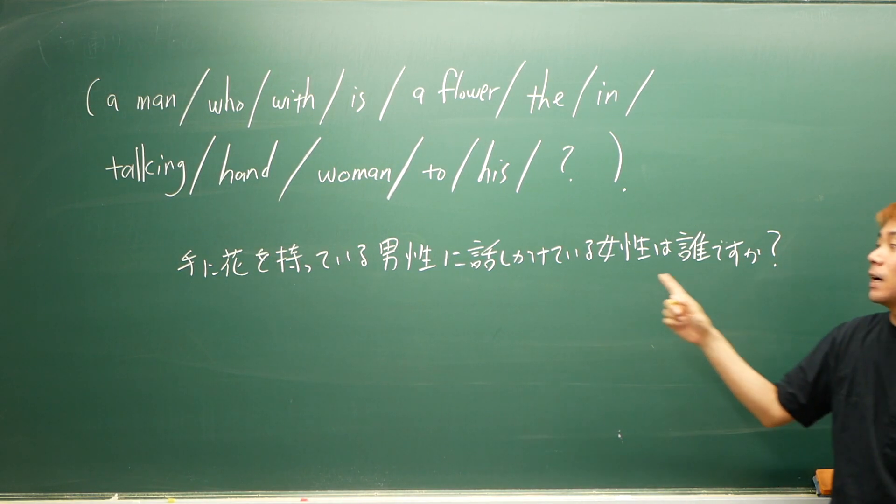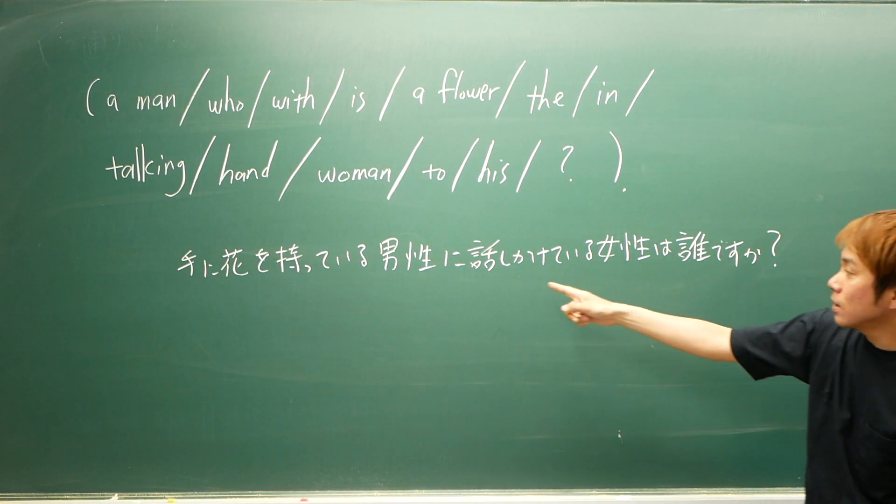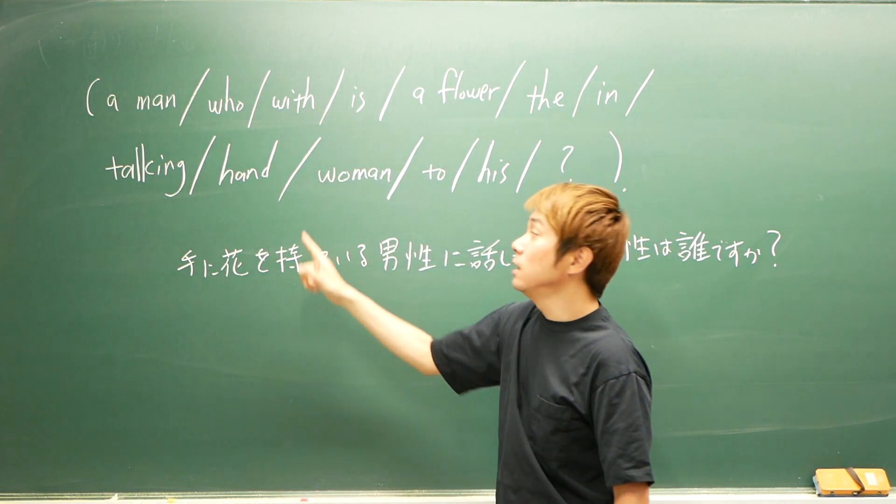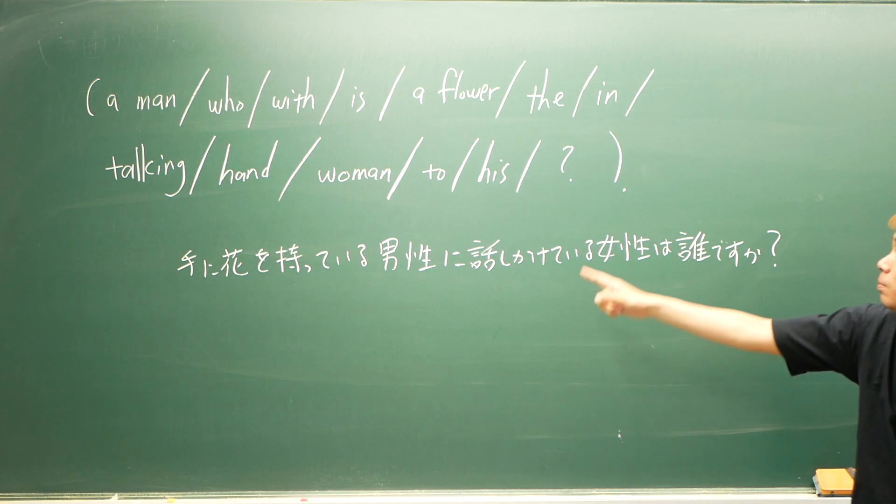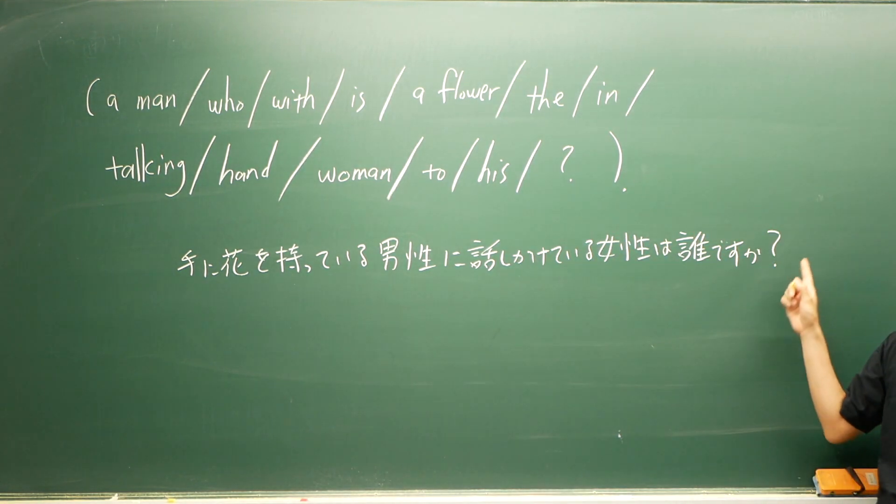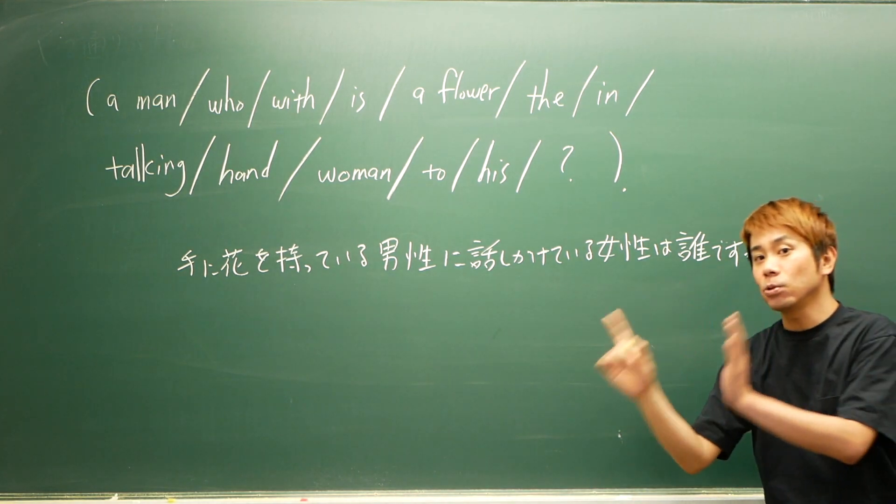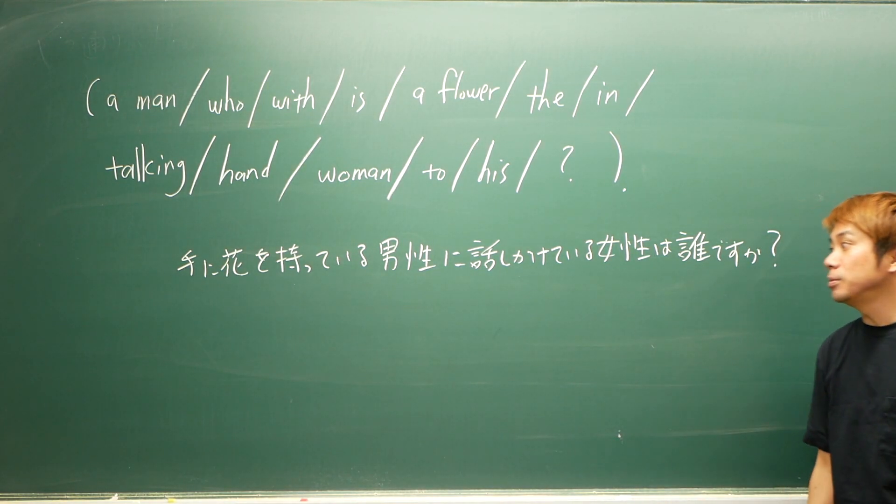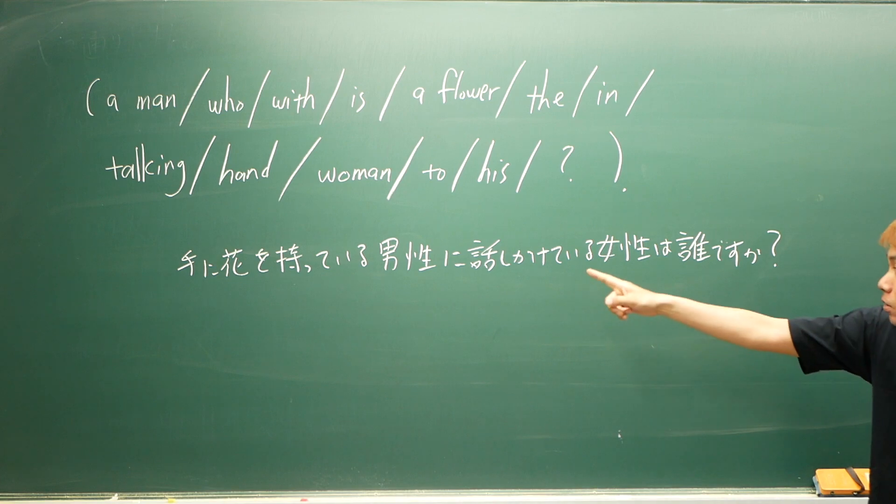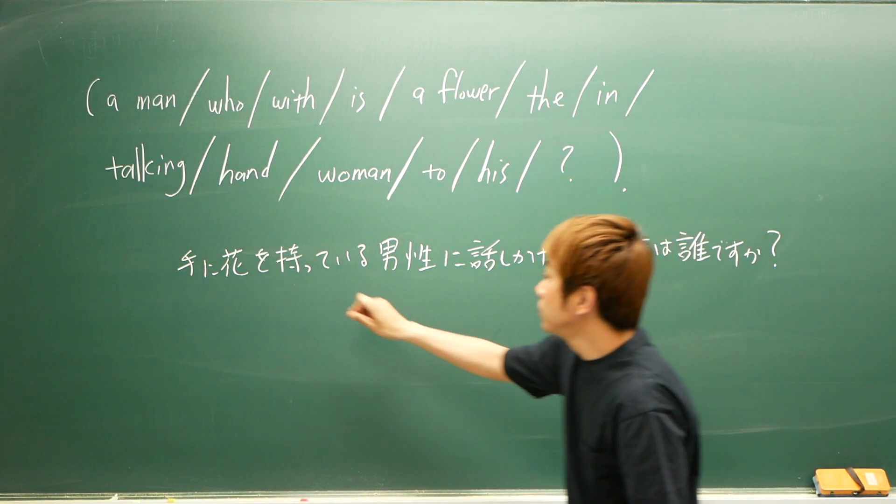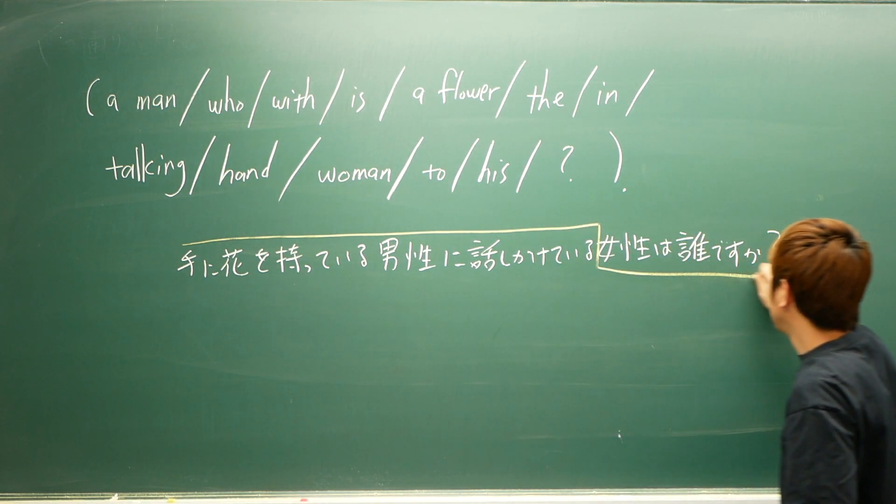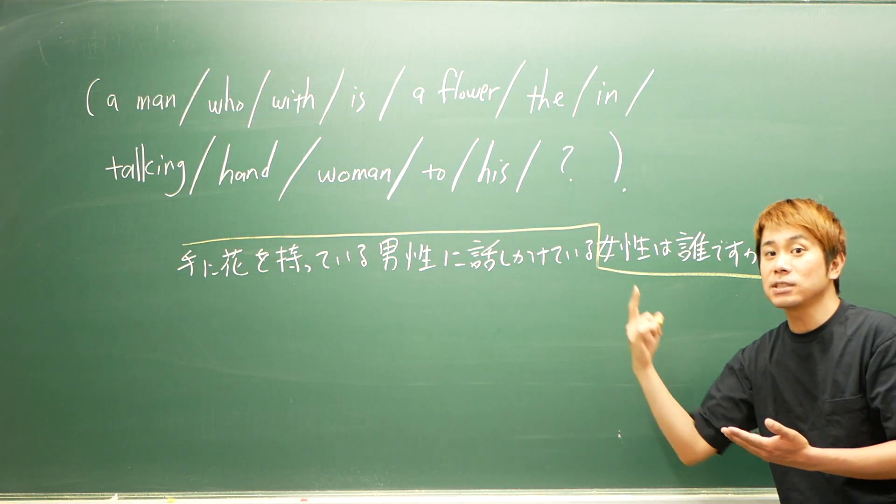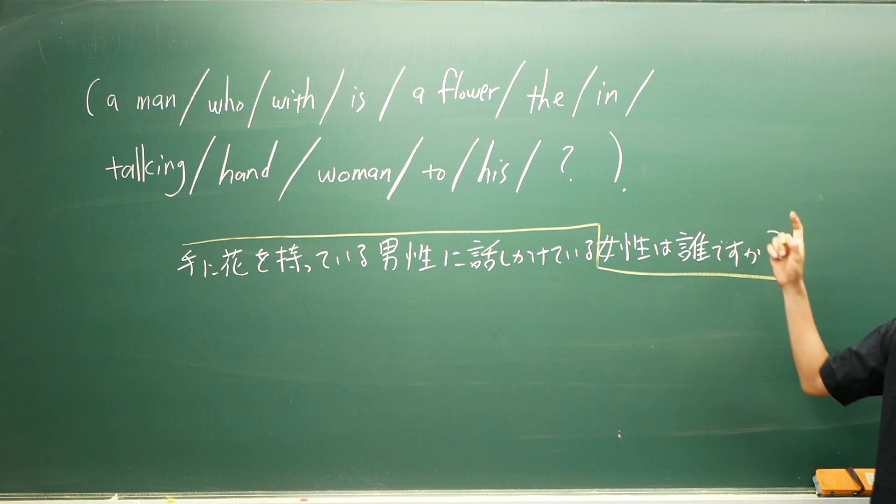その時に日本語訳が与えられている問題だと思ってください。日本語訳で「手に花を持っている男性に話しかけている女性は誰ですか」っていうちょっと長い文章があるわけ。これいろいろ長いな、どっから手をつけてみよう。手に花を持っているんだから、多分flowerとかはwithと一緒につなげるんだろうなとか、断片的にやってもいいんですが、まず根本的にこれは英語なので、一番言いたい部分は何なのか。